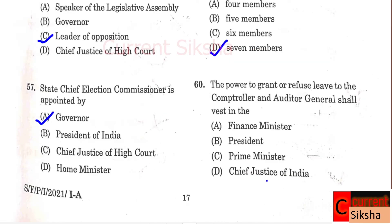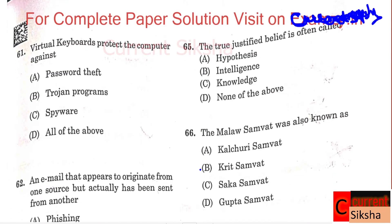Question 58: Consider the following statements - which are correct? Correct option B - 1 and 2. The Chief Election Commissioner of India is paid a salary equal to the salary of judges of the Supreme Court. The term of the Chief Election Commissioner shall be 6 years from the date of assuming office or till the age of 65 years, whichever comes first. Question 59: The Madhya Pradesh Public Service Commission shall consist of maximum? Correct option D - 7 members. Question 60: The power to grant or refuse leave to the Comptroller and Auditor General shall vest in? Correct option B - President.